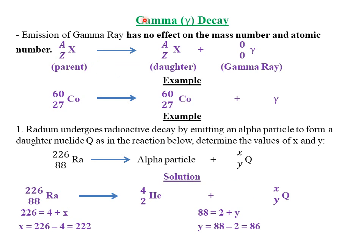Next, the third and last type of radiation is called the gamma ray — we look at gamma decay. Emission of gamma rays has no effect on the mass number and atomic number of a nuclide. If parent nuclide X with mass number A and atomic number Z decays by emitting a gamma ray, the daughter nuclide is still X with the same mass number A and atomic number Z, because the gamma ray has no mass number and no atomic number.